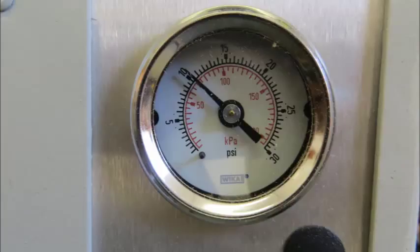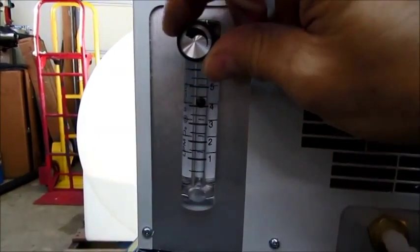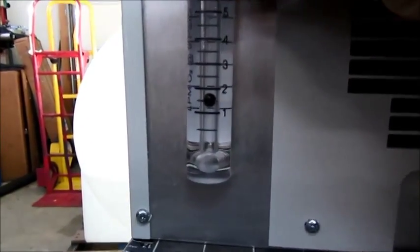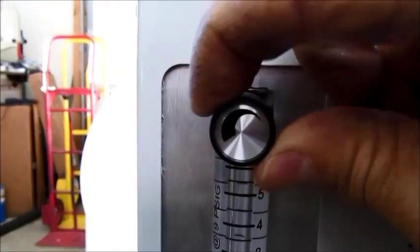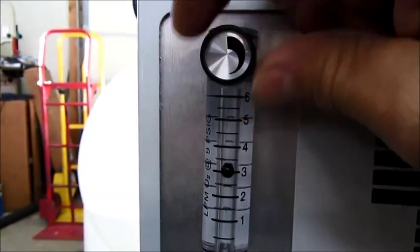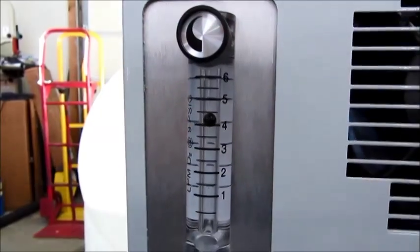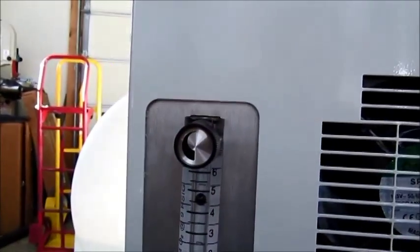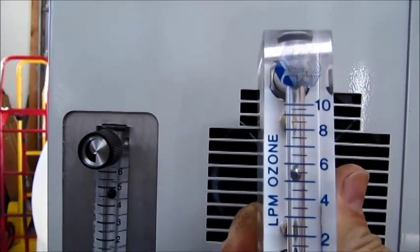Then we'll go to the left-hand side of the unit and look at the flow gauge with the flow adjustment. Turning it clockwise shuts down the flow, and turning it counterclockwise opens it back up. We want to set it to about 5.5 liters per minute as measured on our flow gauge.